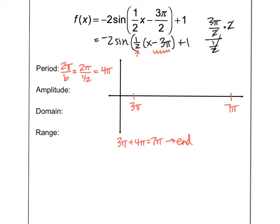Now I have to find all of my halfway points. So halfway between three pi and seven pi is going to be five pi. Halfway between those two values, I'll have four pi and six pi. And now I'm done with everything on my x-axis.